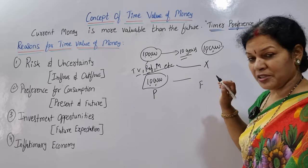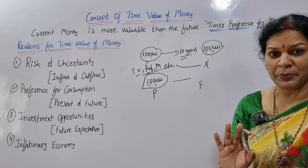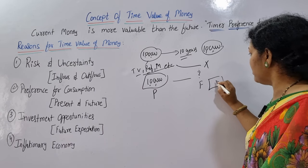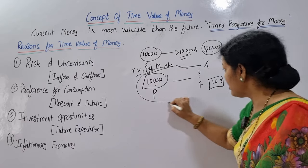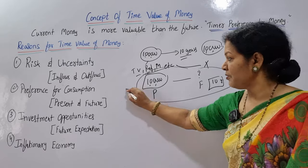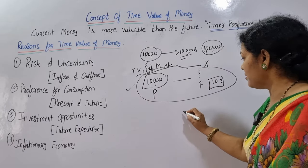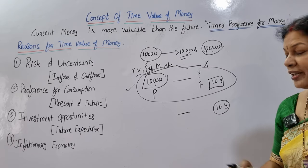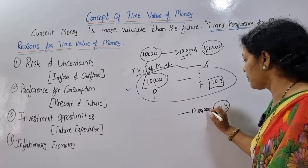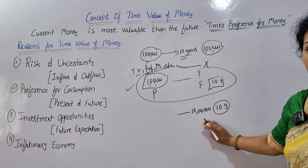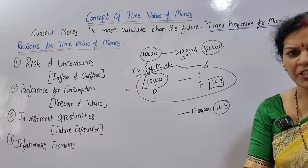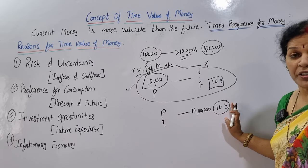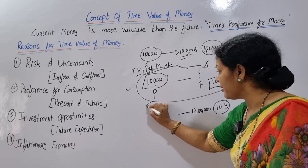In the future — say 5 years or 10 years, whatever period you want — how much will that money be worth? This is one concept. The first concept: present value is 1 lakh, future value after 10 years is unknown. And the second concept: after 10 years you are going to get 10 lakh rupees, but right now in 2023, what is the present value of that 10 lakh?